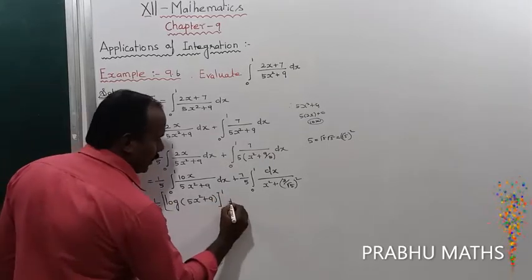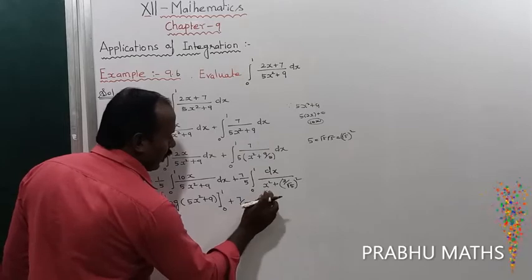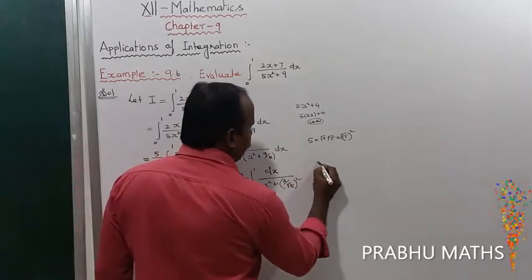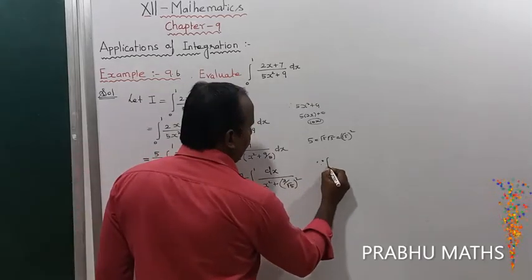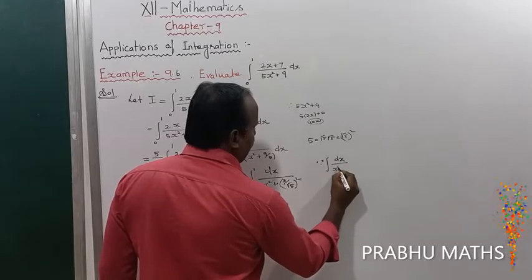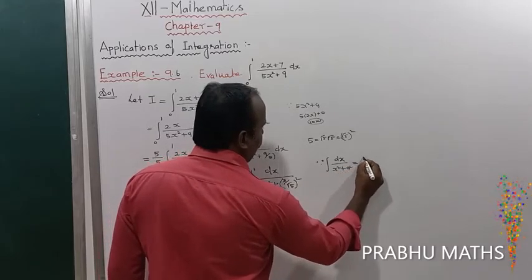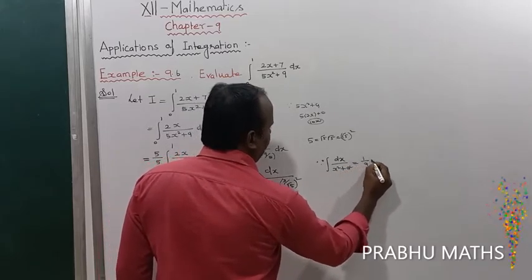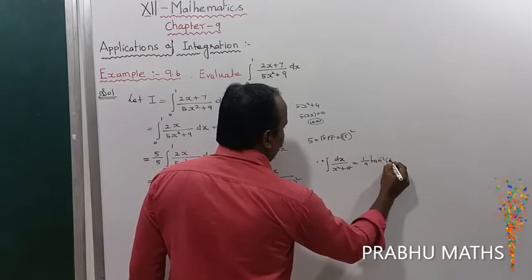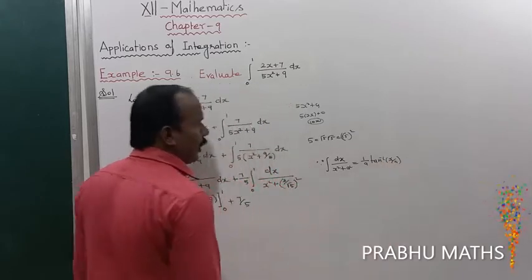Next, plus (7/5) times the formula: ∫ dx/(x² + a²) = (1/a)·tan⁻¹(x/a). That is the formula.